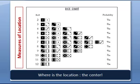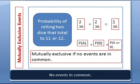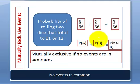Mutually exclusive events are events with no outcomes in common. For example, rolling an 11 or a 12 — I can't roll both at the same time. So the probability of getting an 11 or a 12 is simply 3/36 plus 2/36, which equals 5/36. You just add the probabilities together.